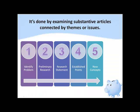A review of literature is done by examining substantive articles, books, or other sources connected by themes or issues. You've already begun the process by determining your topic, preparing an annotated bibliography, writing a summary response essay, and writing a hypothesis and an outline of key points relative to your project. All of those activities can be brought to bear on your review of literature.